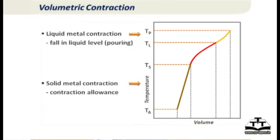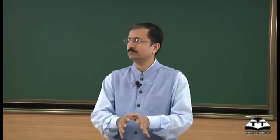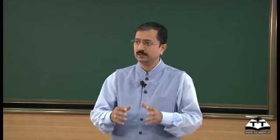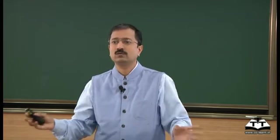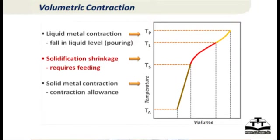Let us be very clear where we need the feeder. The contraction we talked about earlier has three parts. The first part is liquid contraction, from pouring temperature to liquidus temperature, which is compensated by pouring excess metal in the gating system. The second part is from liquidus to solidus, where we need to apply feeders. The third part, completely solid contraction, is taken care of by mold elements discussed in the last lesson.